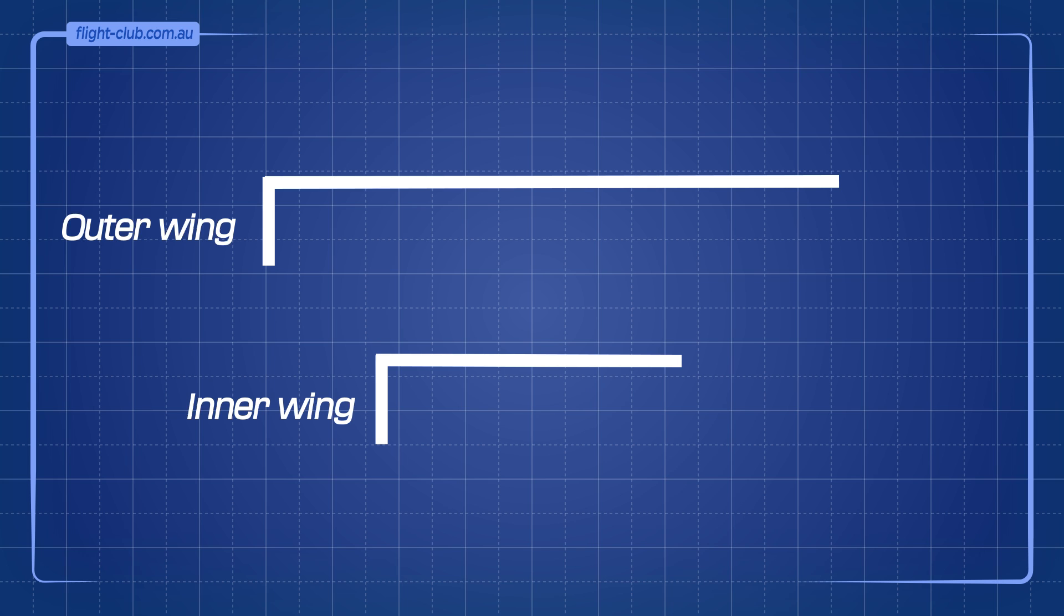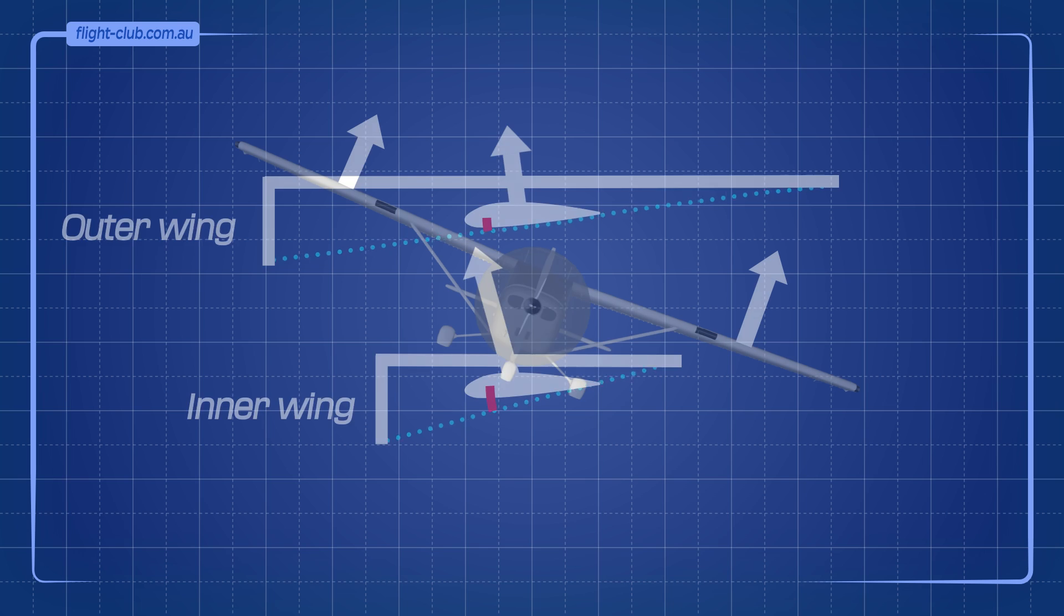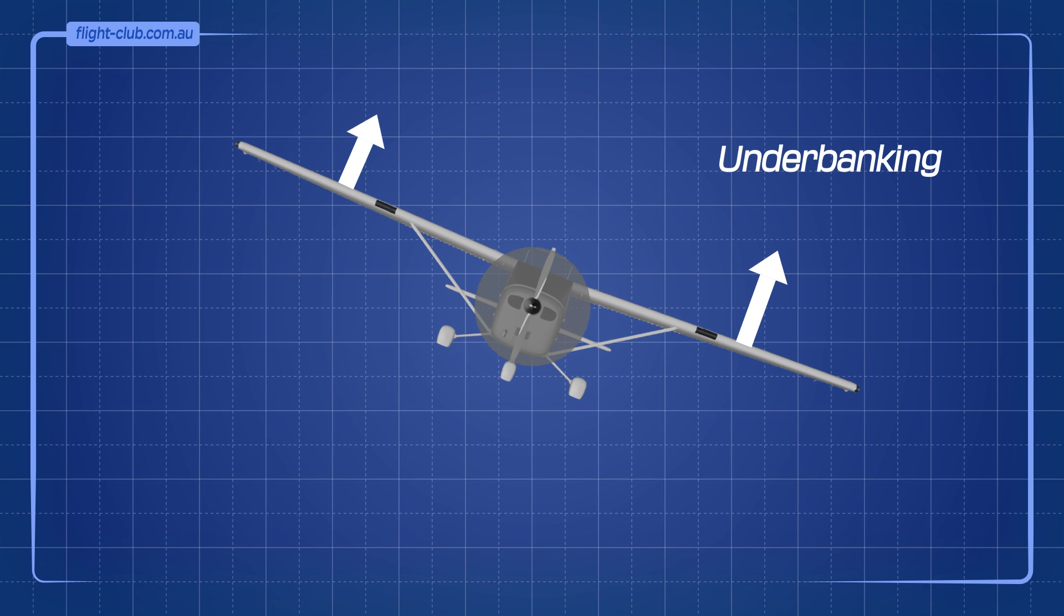But because the aeroplane is descending, the steeper relative airflow acting on the inner wing causes it to have a greater angle of attack than the outer wing. The inner wing generates more lift. This is called underbanking. And it may, or may not, cancel out the first overbanking effect when turning and descending.